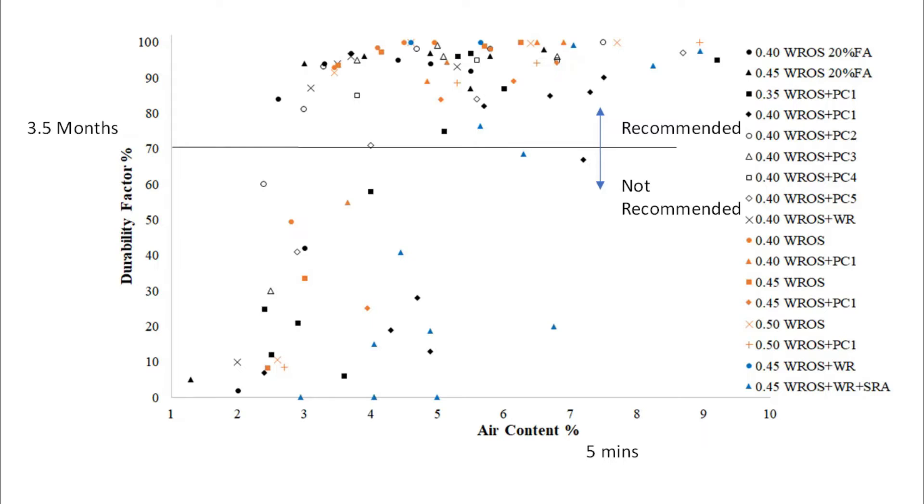But just some data here. I'm showing air content on the x-axis. I'm showing durability factor or performance in the freeze thaw test on the y-axis. And then this number right here, this is the good stuff above it. This is the not so good stuff below it. And look, here's one at 7% air, which meets a lot of specifications that's not performing well. Here's some at 5% air that meets a lot of specifications that's not performing well. This is why air volume is not enough.